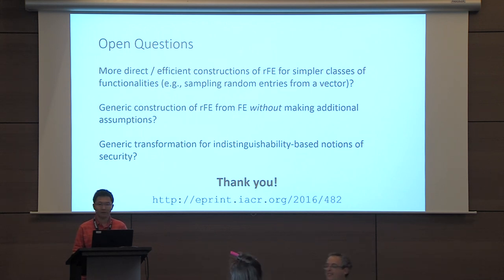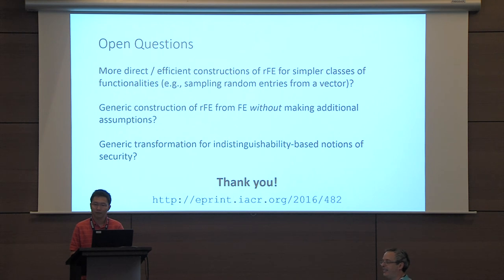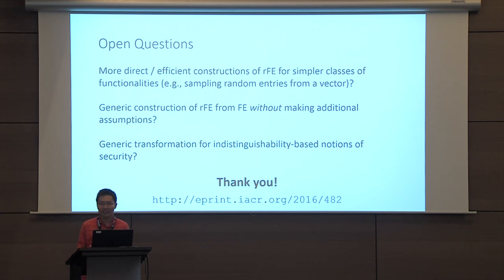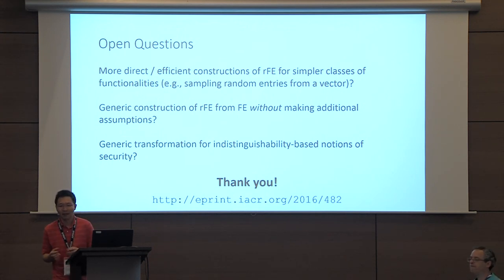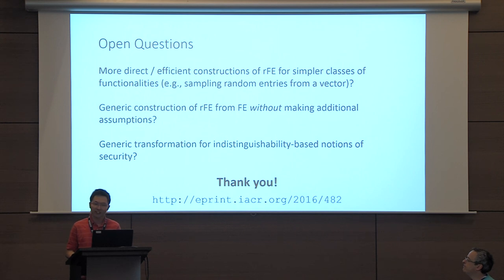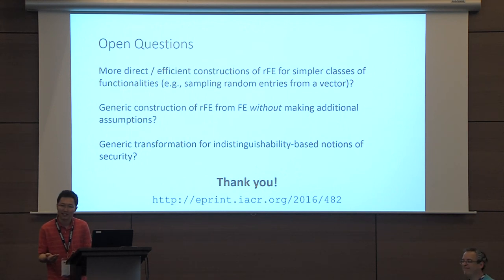Question: The previous construction of randomized FE used IO. Why doesn't the following work — start from a deterministic FE, apply the FE-to-IO transformation, and then apply the IO-based construction? Answer: That is one way to do this transformation and makes no additional assumptions. But if you start with a bounded-collusion-secure functional encryption scheme from PKE or LWE, you can't bootstrap that to IO. So this work gives a new class of randomized FE schemes secure in a bounded collusion setting from standard public key encryption assumptions. The open question can also be reformulated as: can you avoid the sub-exponential loss in the security reduction that the FE-to-IO construction incurs, achieving only polynomial loss?